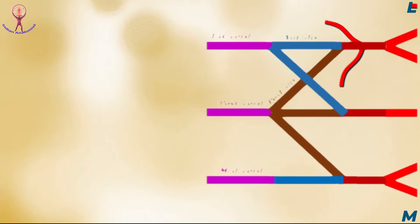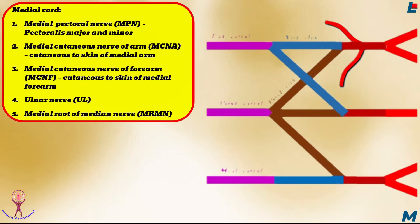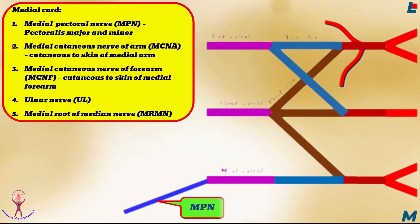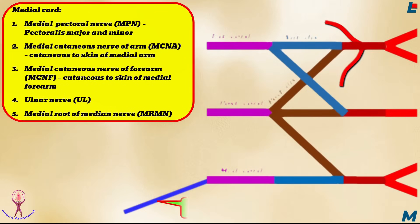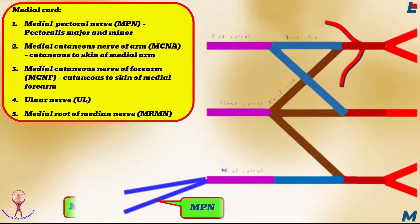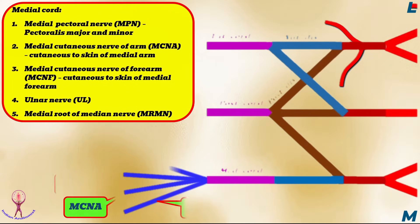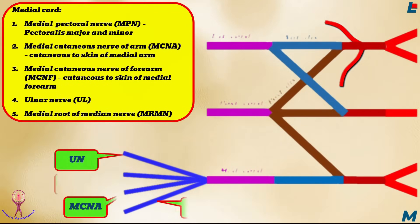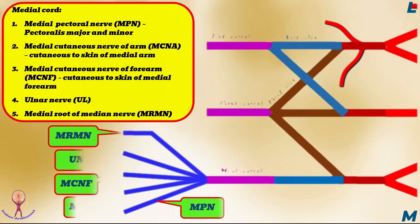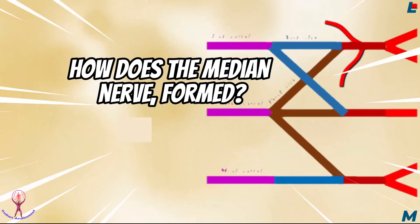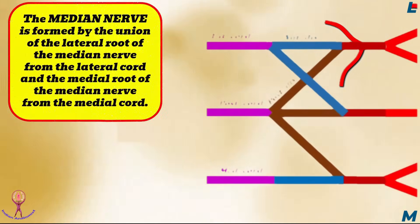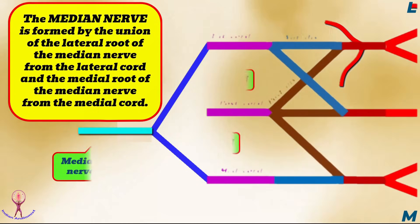Branches from the medial cord: the medial cord gives 5 branches, from medial to lateral. First, the medial pectoral nerve, which again supplies pectoralis minor and major muscles — students should understand that pectoralis major and minor are supplied by both medial and lateral pectoral nerves. Second, the medial cutaneous nerve of the arm, supplying the medial skin of the arm. Third, the medial cutaneous nerve of the forearm, supplying the medial skin of the forearm. Fourth, the ulnar nerve, supplying most hand muscles and some forearm muscles. Fifth, the medial root of the median nerve, which fuses with the lateral root of the median nerve from the lateral cord, thus forming the median nerve proper.